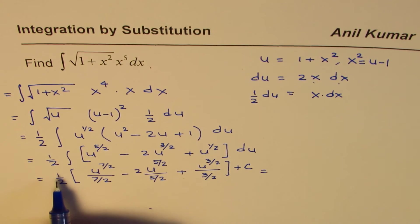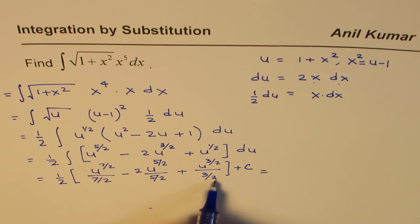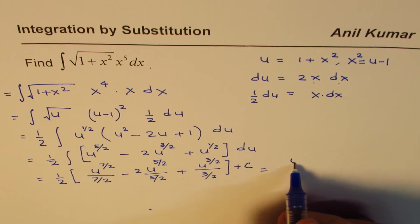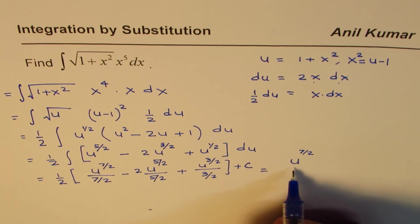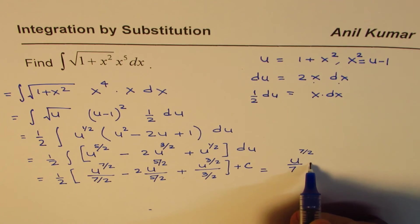What we have here is when you multiply by half, all these 2s in the denominator will cancel off. So let me rewrite this as u to the power of 7/2 over 7.